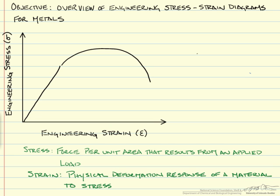When a test specimen is first placed in a tension testing machine, the force is increased and the strain is proportionally increased. If we look on our stress-strain diagram, this is the linear portion of our graph. If you were to release the specimen in this region, the specimen would return to its original shape, so no deformation has taken place. At the micro level, the bonds are stretching. This is considered the elastic region of the stress-strain diagram.